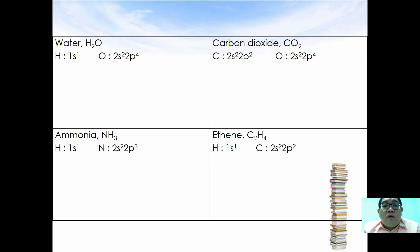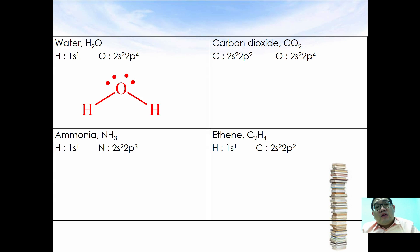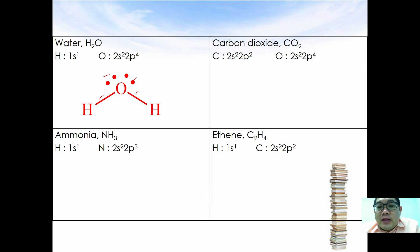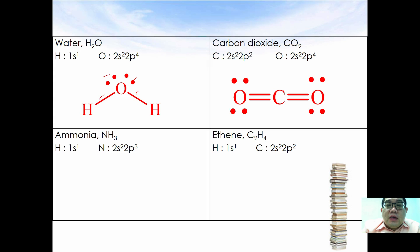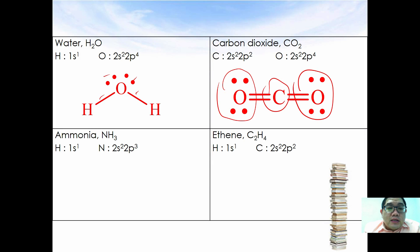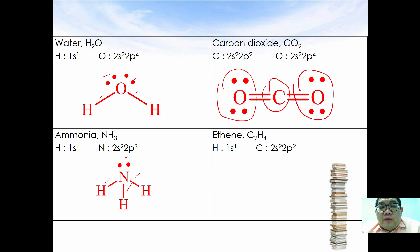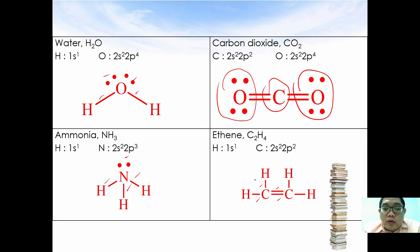Here are other examples of covalent bond formation. For water: hydrogen is 1s¹ and oxygen is 2s² 2p⁴. For hydrogen to achieve duplet and oxygen to achieve octet, hydrogen shares electrons with oxygen to give oxygen 2, 4, 6, 8 electrons. For carbon dioxide (CO2), each carbon shares two double bonds with two oxygen atoms so that both carbon and oxygen achieve octet. For ammonia, three hydrogen atoms share with nitrogen giving nitrogen 2s² 2p⁶ and each hydrogen 1s².